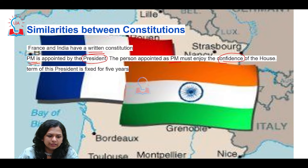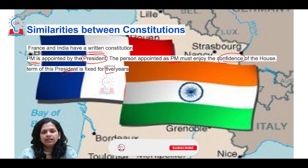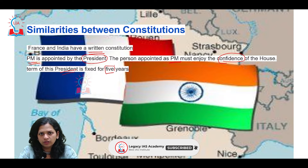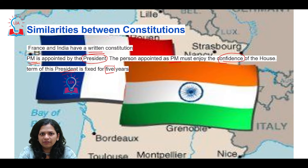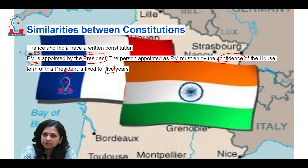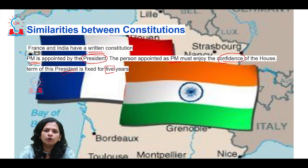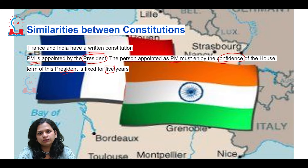The term of the president in both the Indian and French constitutions is the same — fixed for a period of five years. It can of course be shortened in the event of death, resignation, or removal, but after five years the person can be re-elected. The term of presidentship is only five years.